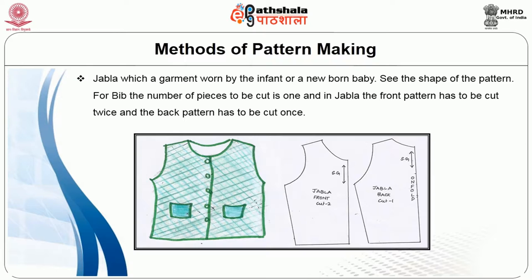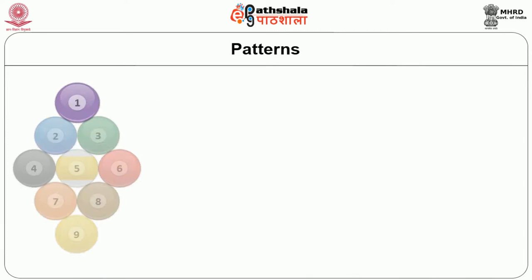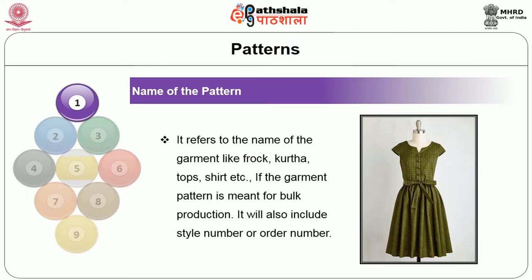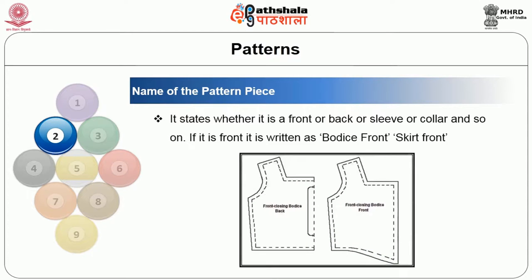The number of pieces to be cut for bib is 1, while for jabla the front pattern is cut twice and the back pattern is cut once. Patterns also have descriptions written on all pieces, called pattern details. These include: the name of the pattern — the garment name such as frock, kurta, tops, or shirt, and for bulk production, a style number or order number. The name of the pattern piece states whether it is a front, back, sleeve, collar, etc. — written as body's front, body's back, skirt front, or skirt back.